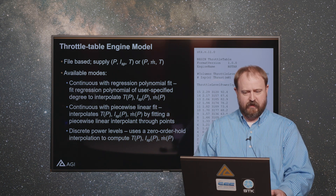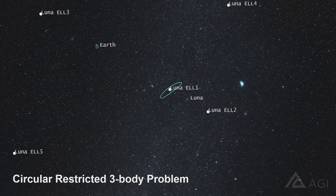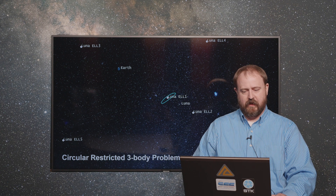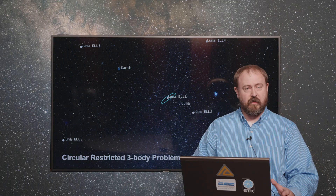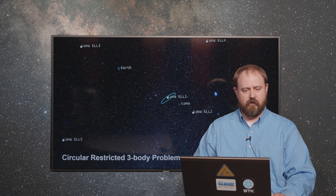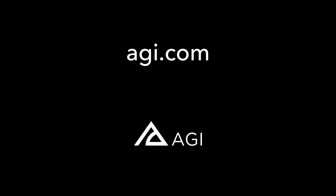We're really excited about the throttle table model — folks have been asking for that for a while. Another cool thing coming is a native implementation of the circular restricted three-body problem, and I'm actually going to go into that in greater detail in another video. That basically covers the new things coming in SDK 11.7 for Astrogator. Thanks for listening.